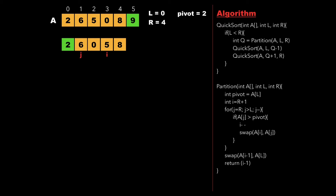Now again 6 is greater than pivot, so we decrement the value of i and swap 6 with 0. Now finally j points to 2 which is at index 0, and since j is not greater than L we exit the for loop and swap A[i-1] with A[L], that is we swap 2 with 0, and return the value Q as 1. So now 2 is inserted at its correct location and the subarray is divided into left partition as 0 and right partition as 6, 5, 8.